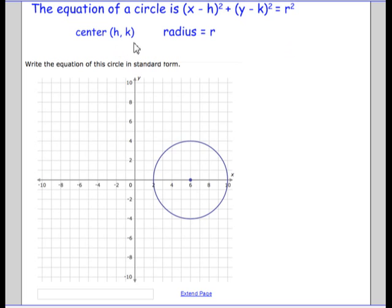And again, the center is at (h, k), that's what the h and the k represent, and the radius is r. So, if we can identify the center, the coordinates of the center, and identify the radius, all we have to do is plug in h, k, and r into that equation, and we are good to go.